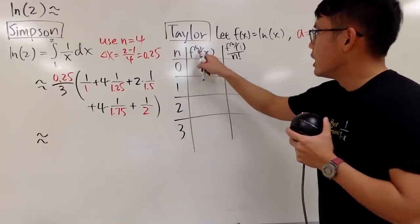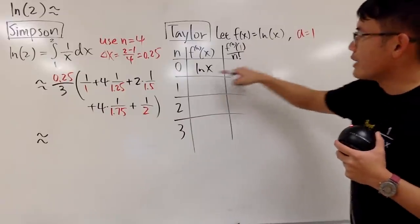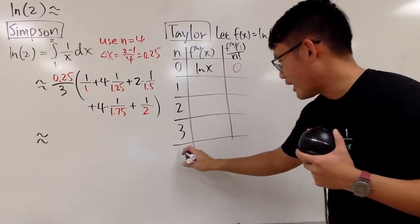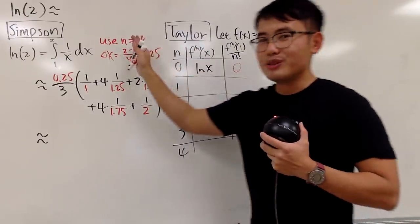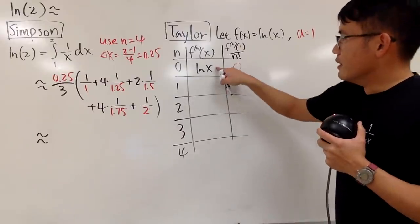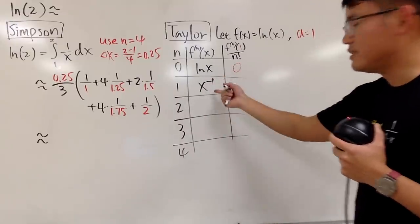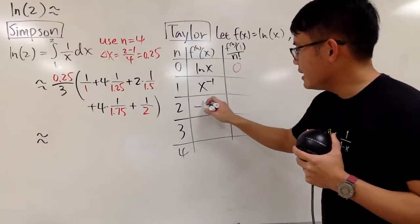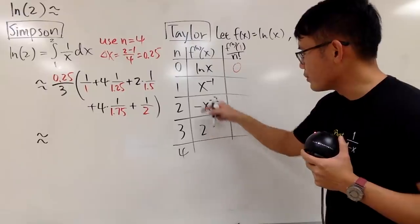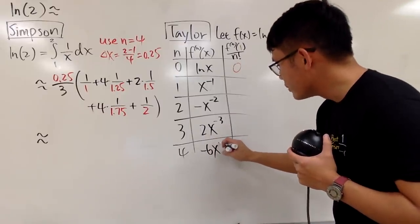Here's a note: the 0th derivative is just the original function ln(x), but evaluating at 1 gives 0, so that term is not a non-zero term. So we go n=1 through 4. Differentiating ln(x): the 1st derivative is 1/x = x^(-1); the 2nd is -x^(-2); the 3rd is 2x^(-3) — because negative times negative 2 is positive 2; and the 4th is -6x^(-4), since 2 times negative 3 gives -6.